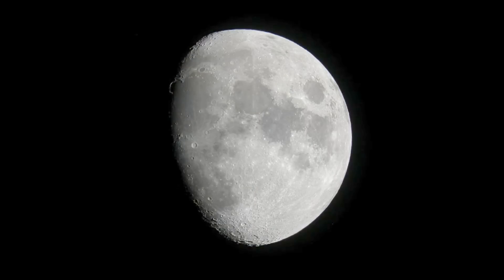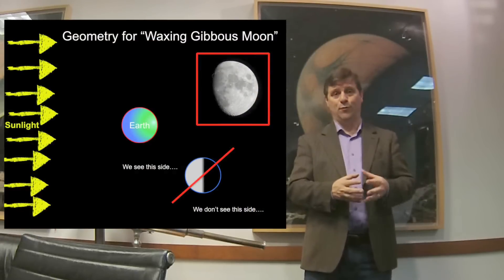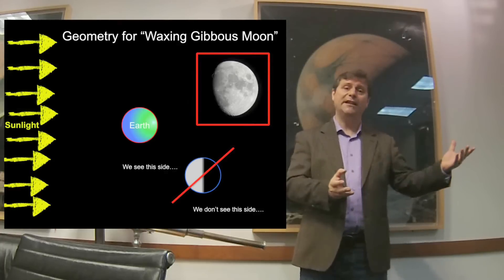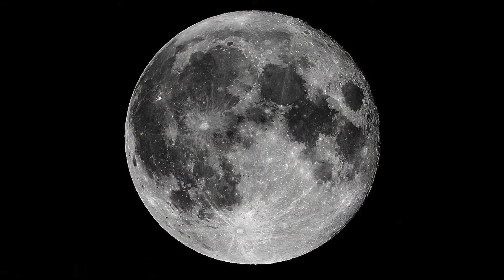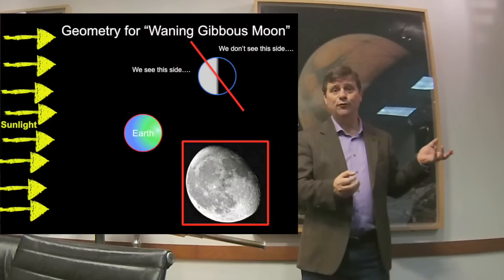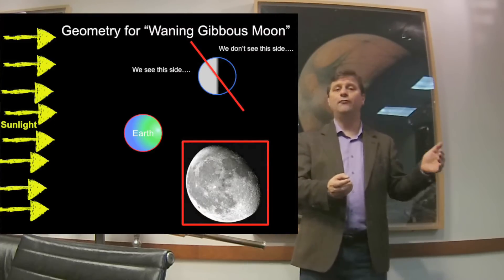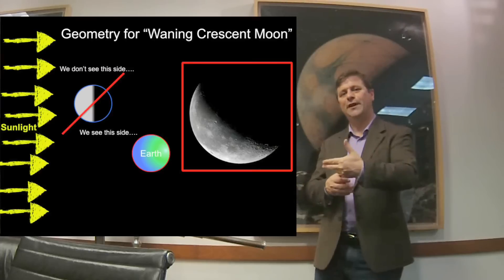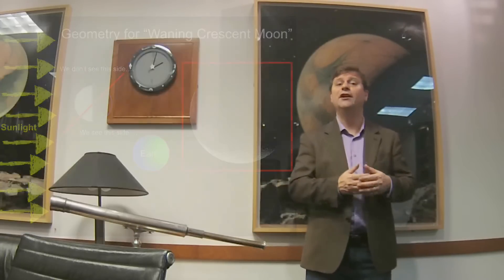After the first quarter Moon, a few days later it's more than half illuminated. When the Moon is more than half illuminated, we call that a waxing gibbous Moon — gibbous just means more than half illuminated. As time goes on, we get to a full Moon, which is fully illuminated. After full Moon, we have a waning gibbous Moon, which again is more than half illuminated. Then we go through third quarter Moon, where it's half illuminated, and then it goes to a waning crescent Moon, and then back to New Moon.